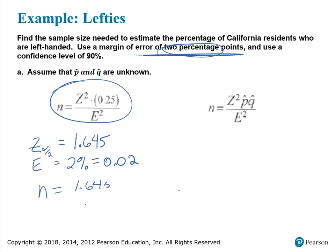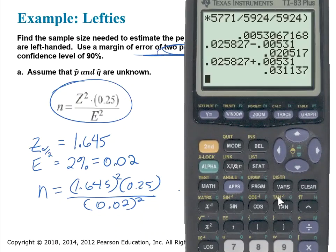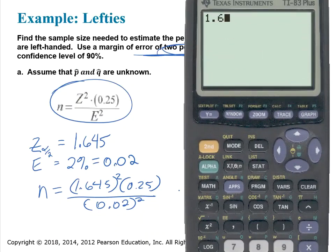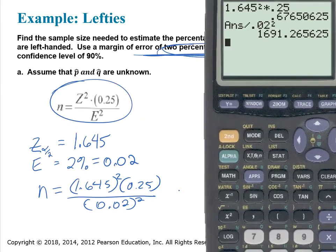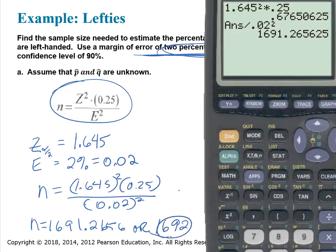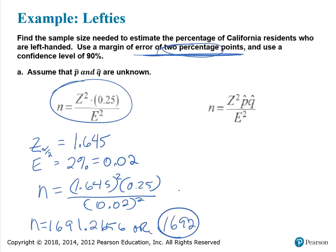Plugging in those values: N equals 1.645 squared times 0.25, divided by 0.02 squared. Using a calculator, 1.645 squared times 0.25 divided by 0.02 squared gives 1,691.2656, which rounds up to 1,692. Therefore, a sample size of 1,692 subjects is required to be within two percentage points for a confidence interval estimate of the percentage of California residents who are left-handed.